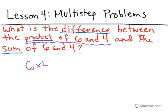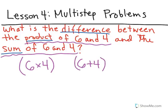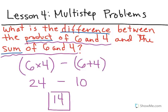We have six and four — we can make that into a product. And we can figure out the sum of six and four as well. Now we just want to find the difference between the two. Thinking back to our order of operations, we do what's inside the parentheses first. Six times four is twenty-four, and six plus four is ten. We've now simplified the problem to twenty-four take ten away. The difference between those two values is fourteen. We'll put a box around our answer.